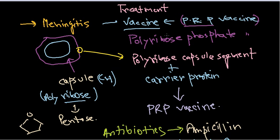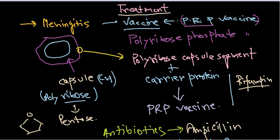Personnel handling PRP vaccines are usually treated with rifampin. The capsular region is antigenic and immunogenic, which is why it can stimulate the immune system. Because we use a subunit of the bacterial cell — the capsule — to produce the vaccine, the PRP vaccine is classified as a subunit vaccine.